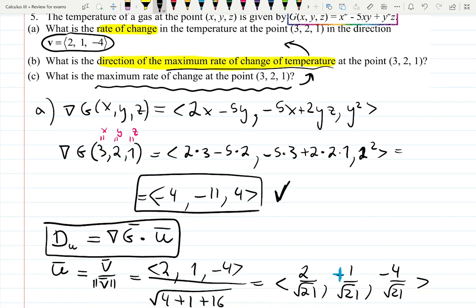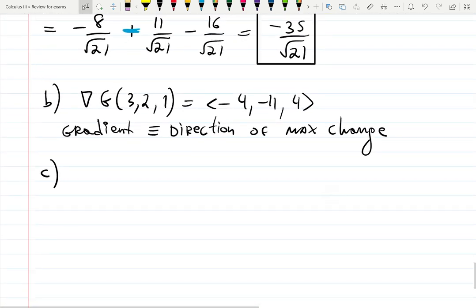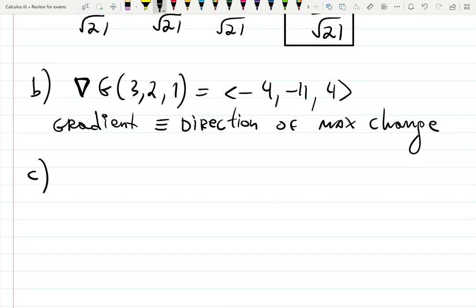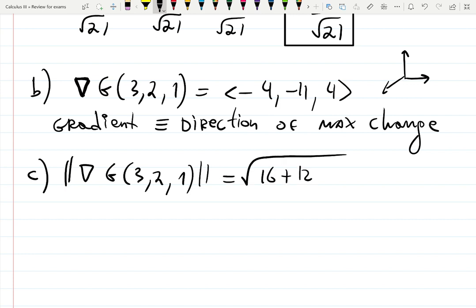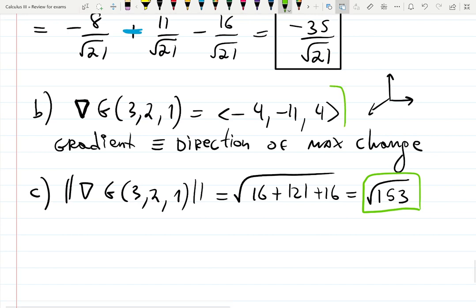Part (c) is asking: what is the maximum rate of change at this point? Again talking about gradient, but in this case they're asking not about direction, they're asking what is the maximum rate of change. If you want to have the most intense hike, hike in this direction <-4, -11, 4>, and the length of this intense hike is the magnitude: √(16 + 121 + 16) = √153.